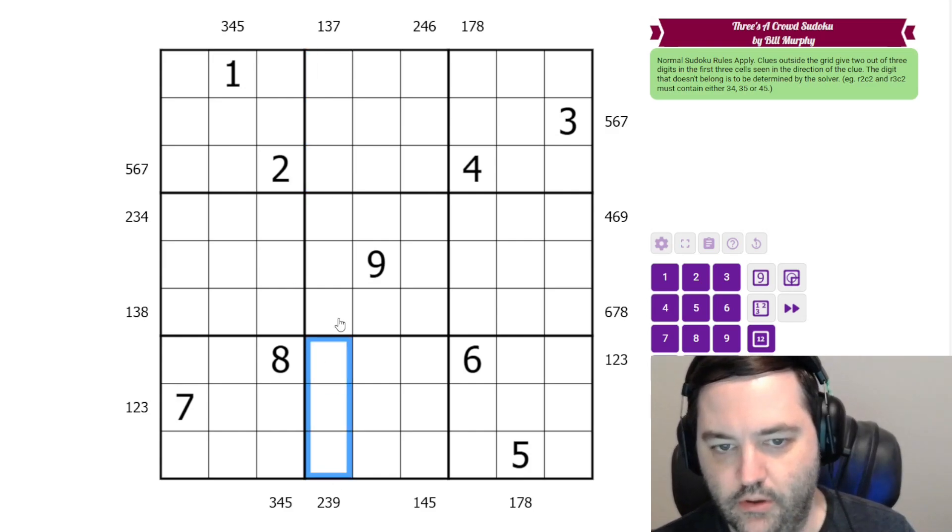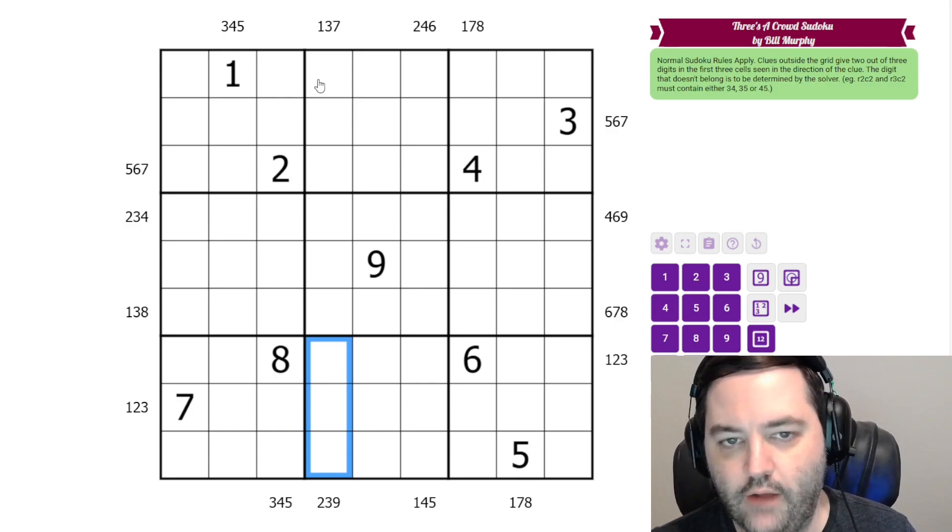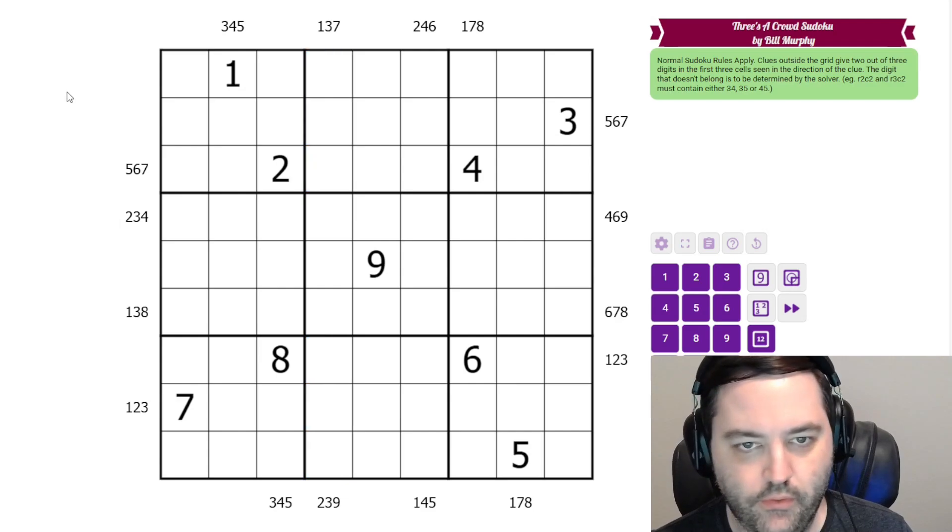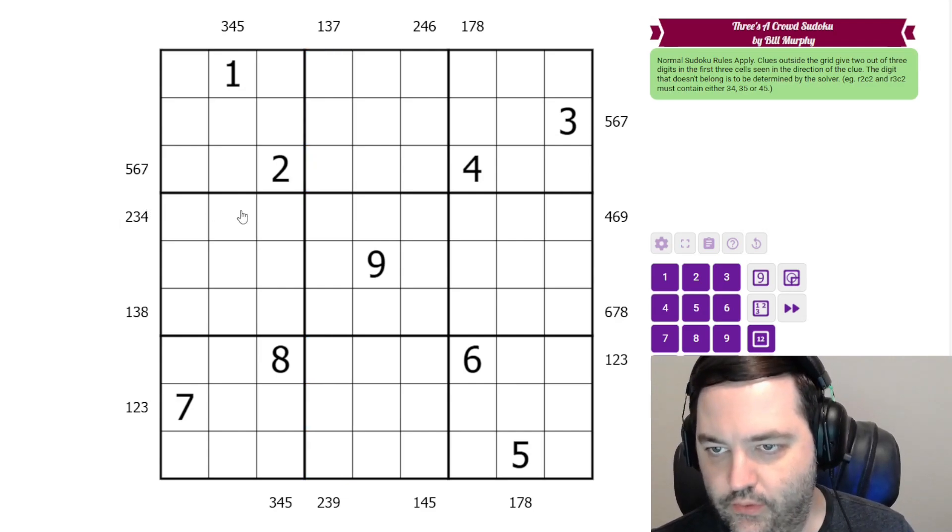And two, three, nine appear in the first three cells of this column from this direction. Now obviously those can't both be true because we can't put a three in both places. And we don't have to in this puzzle.